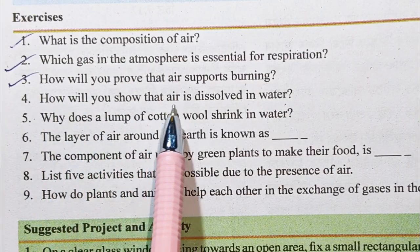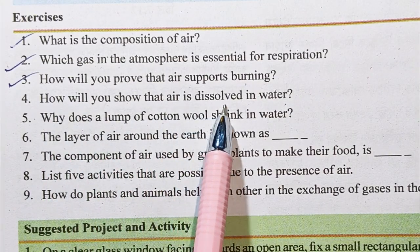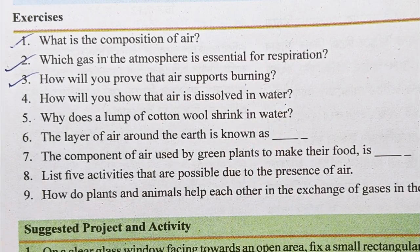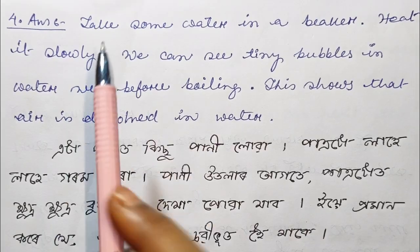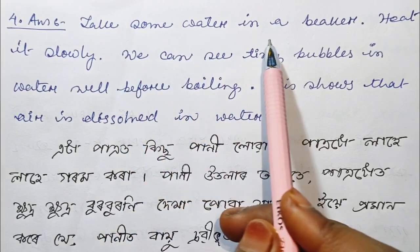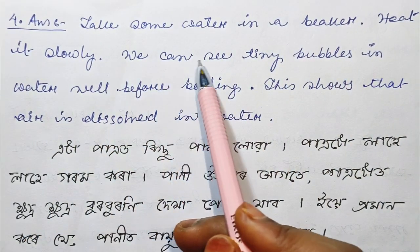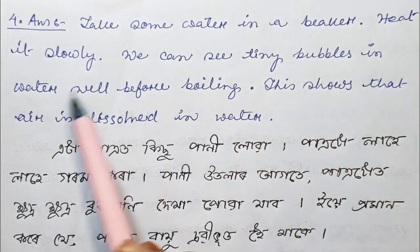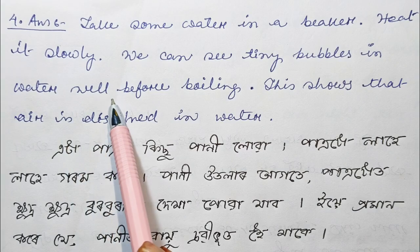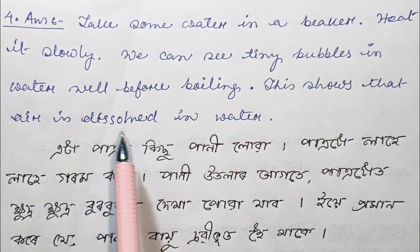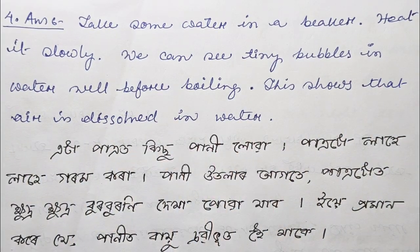Question number 4: How will you show that air is dissolved in water? Take some water in a beaker. Heat it slowly. We can see tiny bubbles in water well before boiling. This shows that air is dissolved in water.